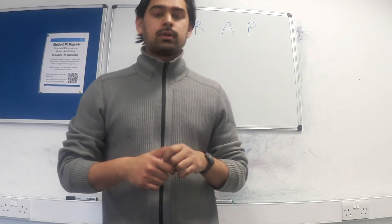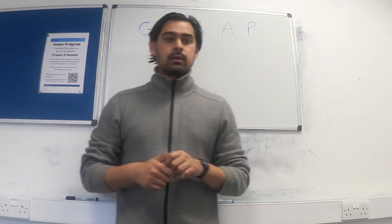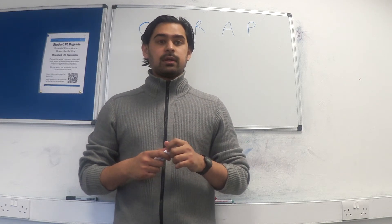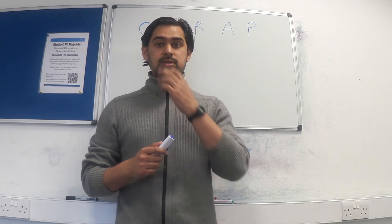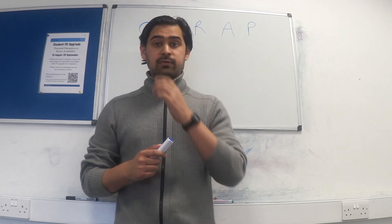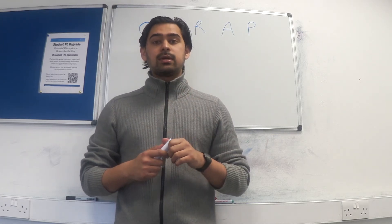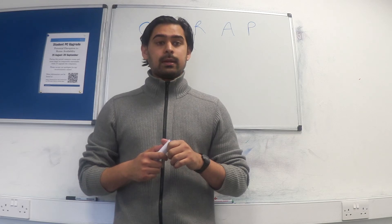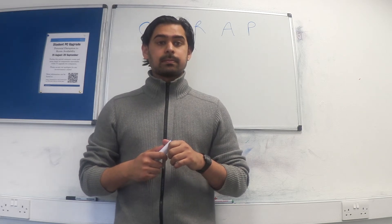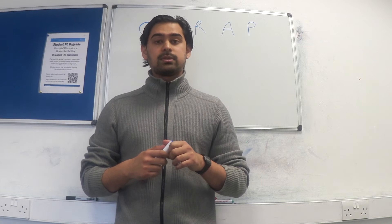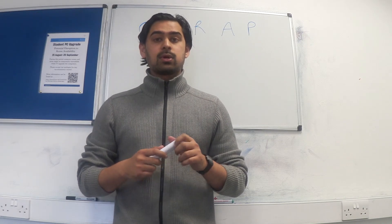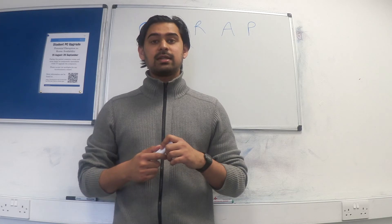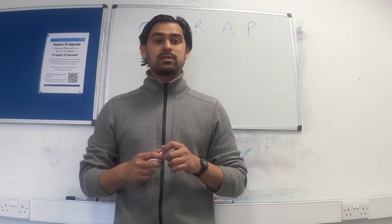A little introduction on HSP — Henoch-Schönlein Purpura. It's a condition that affects mainly children from the ages of 3 to 10. It occurs more in boys and it peaks in winter months. It is the most common form of childhood vasculitis — vasculitis being inflammation of the blood vessels.